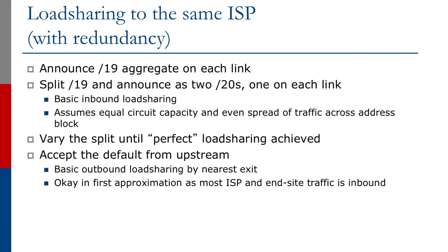So how would we configure this? As before, we announce the slash 19 aggregate on each link. As we work through this series, you'll find that's a common theme — we always announce the aggregate on all external links. It's one of the industry best practices, and the expectation from the regional registries when they delegate address space to an end site. What we're going to do now is take this slash 19 and divide it into two slash 20s, one on each link. Incoming traffic for the first slash 20 will use the first link, and incoming traffic for the second slash 20 will use the second link.